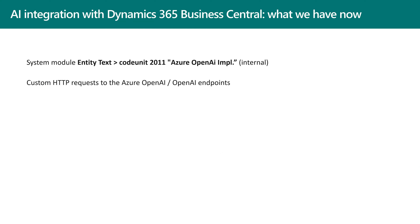When we talk about AI integration with Business Central, what do we have now? At the moment, we are at the very first steps of Azure OpenAI integration inside Business Central. Currently, there is a code unit called Azure OpenAI Implementation, which in Business Central 22 is internal — so you cannot directly use it. But the idea is that in a future release, this code unit will be made public.